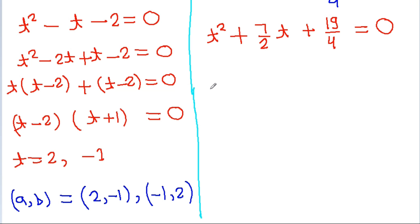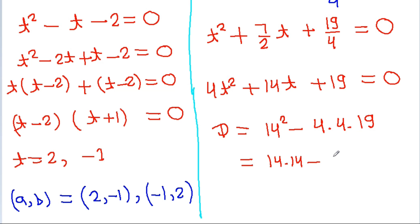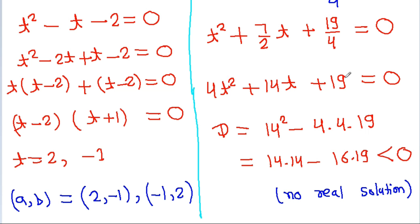For the second case, multiplying by 4 we get 4t² − 14t + 19 = 0. The discriminant d = 14² − 4 × 4 × 19 = 196 − 304, which is less than 0. So there is no real solution for this case. Therefore there are only two real value pairs for (a, b): (2, −1) and (−1, 2).